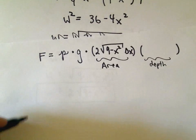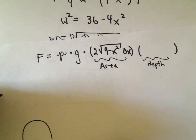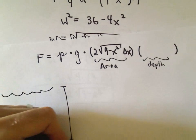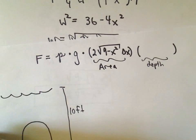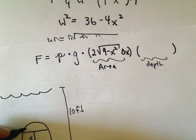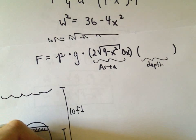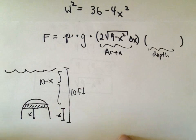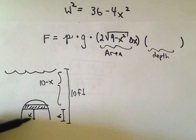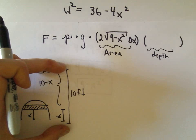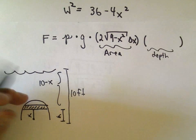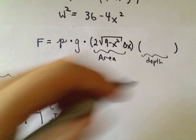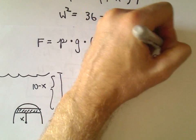We also need to multiply by the depth. Remember, the water level at the beginning of the problem was 10 feet. Since I'm measuring x from the bottom and have already traveled up x units, the remaining depth would just be 10 minus x. So the depth of the i-th slice is 10 minus x.